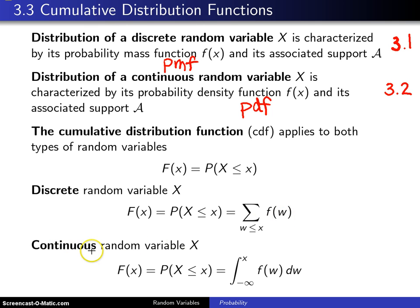In the case of a continuous random variable X, capital F(x) is still the probability X is less than or equal to x, but this time you take the integral from minus infinity up to x of f(w)dw. The two cases are analogous, but a little bit different because of the nature of a discrete versus a continuous random variable.